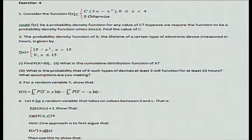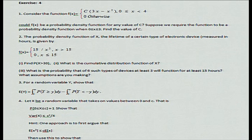I will begin this lecture by discussing Exercise 4. This is on random variables, their PDF, CDF, and expectation. Let us look at Question 1: consider the function f(x) given by c times (3x minus x squared) for x lying between 0 and 4, and 0 otherwise. The question asks: could f(x) be a probability density function for any value of c?